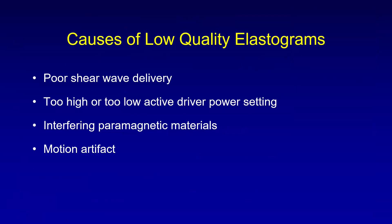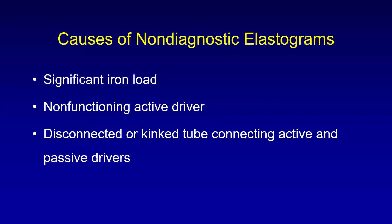Causes of a low-quality elastogram include poor shear wave delivery, too high or too low active driver power setting, interfering paramagnetic materials such as coils or stents, and motion artifacts when the breath hold is inadequate. Causes of a non-diagnostic elastogram include significant iron load — which can be identified on your routine MR sequences — a non-functioning active driver, or a disconnected or kinked tube connecting the active and passive drivers.